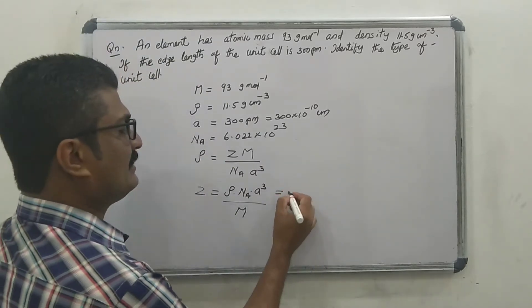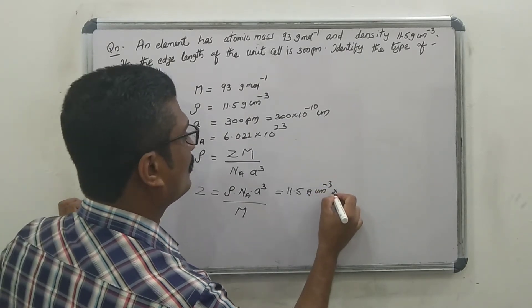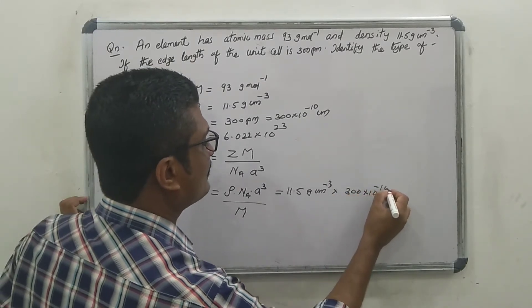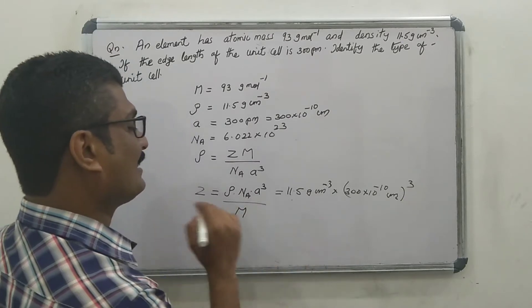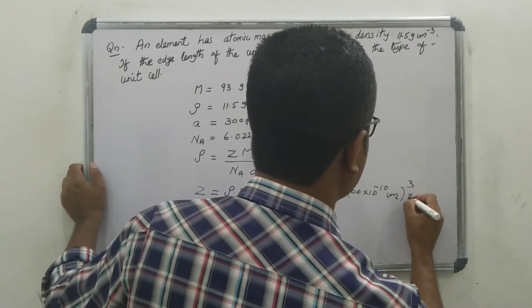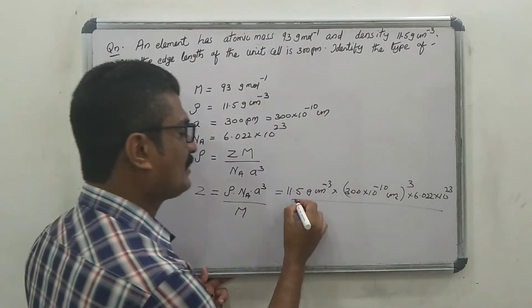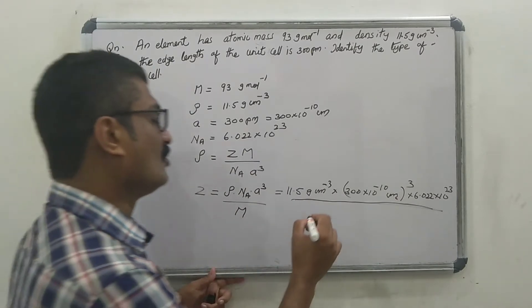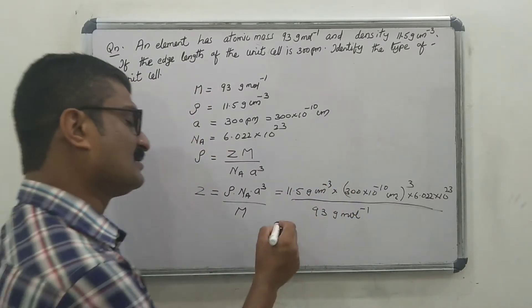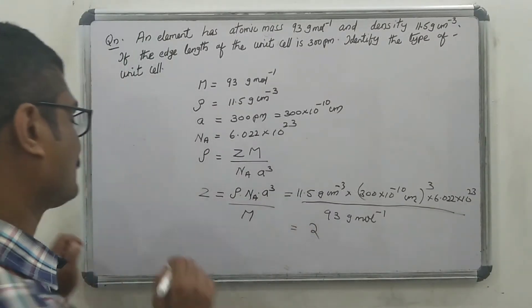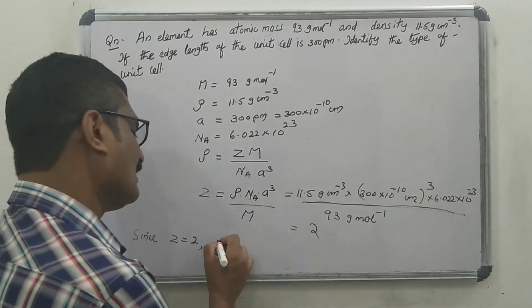Substituting the values: density is 11.5 gram centimeter raised to minus 3, edge length is 300 into 10 raised to minus 10 centimeter, all cubed, Avogadro number is 6.022 into 10 raised to 23, divided by the atomic mass 93 gram per mole. The answer is Z equals 2.